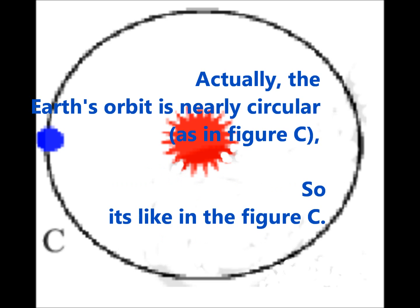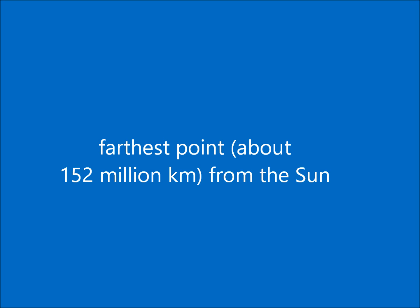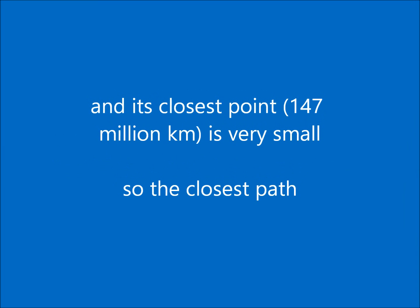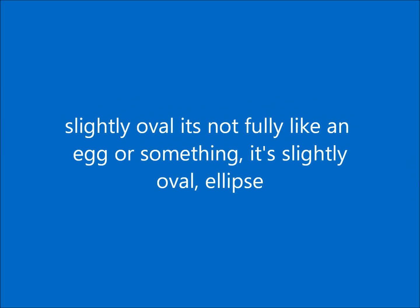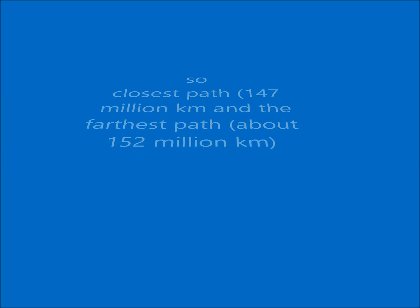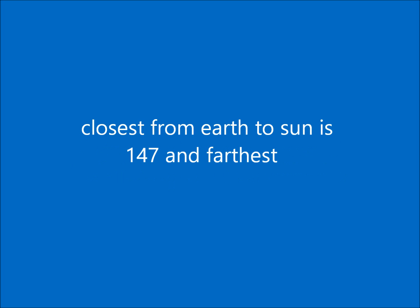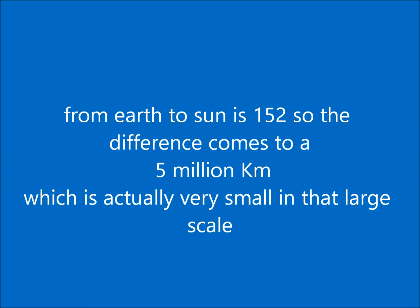Actually, the earth's orbit is nearly circular, as in figure C. The difference between the earth's farthest point from the sun — about 152 million kilometers — and its closest point — 147 million kilometers — is very small. So it's only slightly oval, not like a full egg shape. The closest distance from earth to sun is 147 million kilometers, and the farthest is 152 million kilometers.